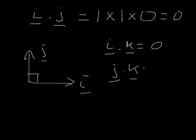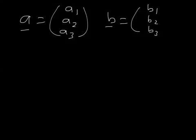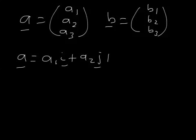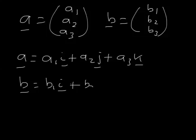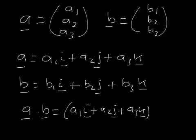So that's true for any two perpendicular unit vectors: the dot product of those is zero. Now let's think about a vector a which has three components a1, a2, a3, and vector b which has three components b1, b2, b3. We can write a as a1 in the i direction plus a2 in the j direction plus a3 in the k direction, and b as b1 in the i direction plus b2 in the j direction plus b3 in the k direction. What's a dot b?